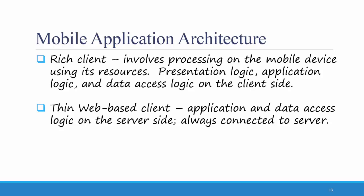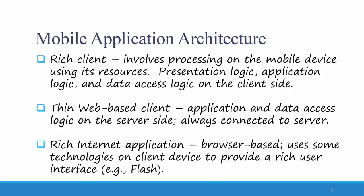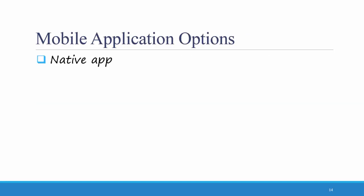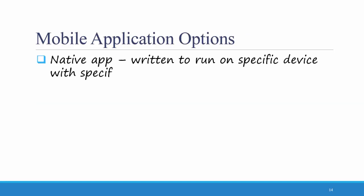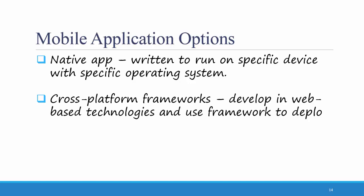Another type of mobile application architecture is a rich internet application. These are browser-based and use some technologies on a client device to provide a rich user interface — for example, Adobe Flash. Rich internet applications are rapidly declining in popularity. Most apps today are either rich clients or thin, web-based clients. A native app is written to run on a specific device with a specific operating system, such as Android or iPhone. A cross-platform framework is developed in web-based technologies such as HTML5 and uses that framework to deploy to multiple devices.